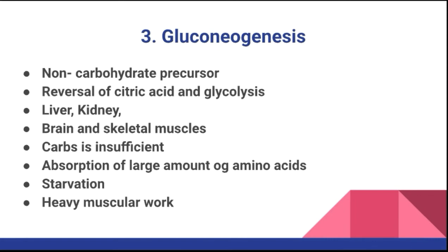The third process is gluconeogenesis. The synthesis of glucose from non-carbohydrate precursors is known as gluconeogenesis. The mechanism involved in gluconeogenesis is the reversal of the acid cycle and glycolysis. In glycolysis, glucose is converted to pyruvic acid, but in gluconeogenesis, pyruvic acid is converted back into glucose — it is the reverse process of glycolysis.